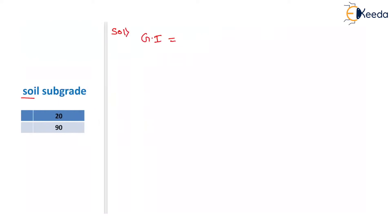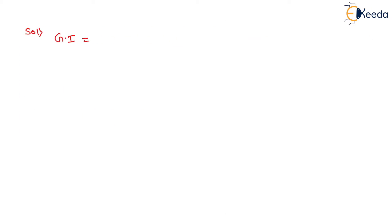We have to use the group index value for finding the thickness of the pavement. The group index formula is: GI = 0.2A + 0.005AC + 0.01BD.